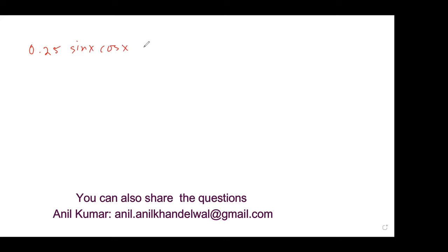Yes. What is it? 0.25 sin x cos x. You have to simplify this, right? Yeah. So 0.25 is like 1 over 4, right? So you can write 1 over 4 sin x cos x. Is that clear to you? Yeah.